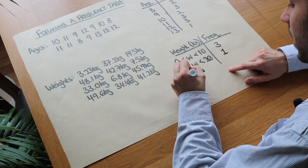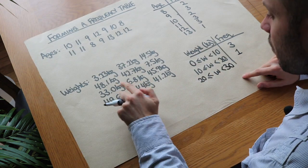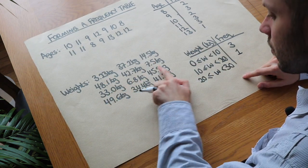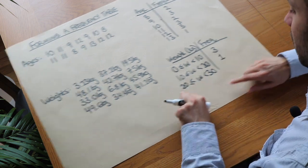What about between twenty and thirty? We've got how many? None at all. So we're going to put zero.